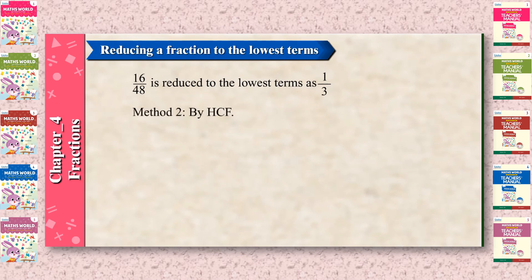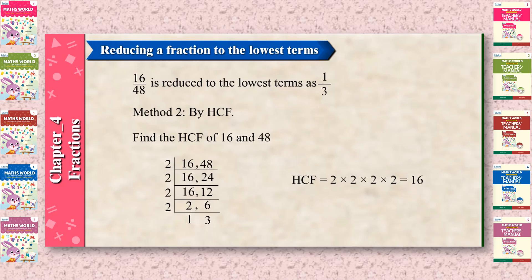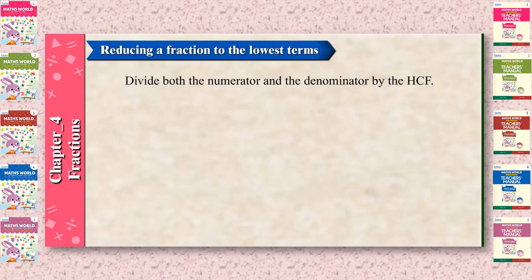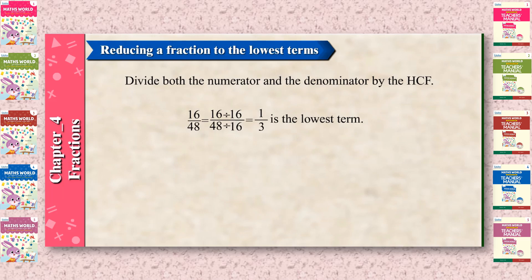Method 2: By HCF. Find the HCF of 16 and 48. HCF = 2 × 2 × 2 × 2 = 16. Divide both the numerator and the denominator by the HCF. 16 upon 48 = 16 ÷ 16 upon 48 ÷ 16 = 1 upon 3, which is the lowest term.